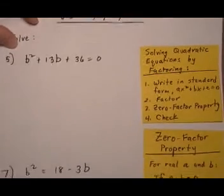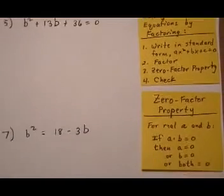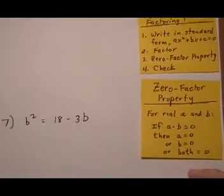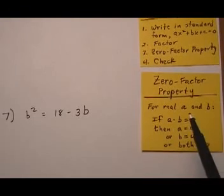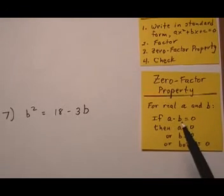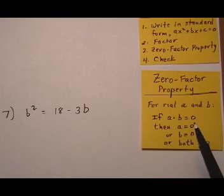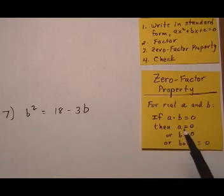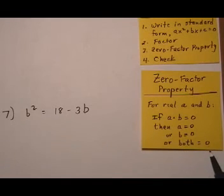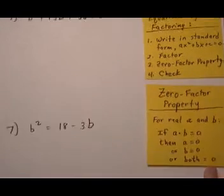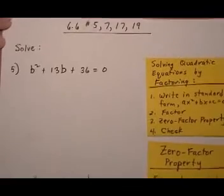In case you didn't see the last video clip, the zero factor property tells us that for any real numbers a and b, if a times b equals zero, either a equals zero, b equals zero, or both a and b equal zero. So we'll apply that within the solving of the equation.